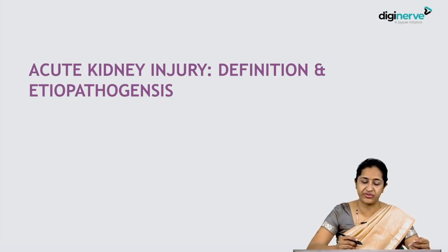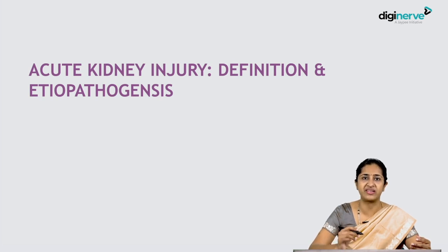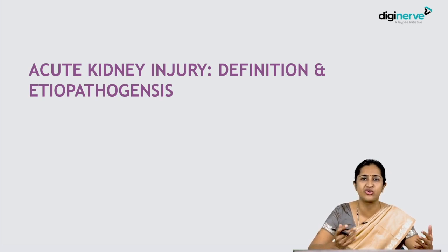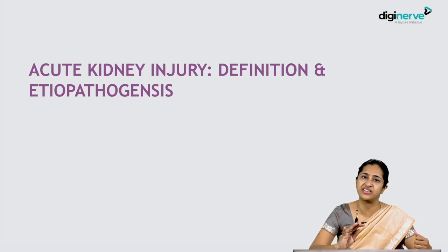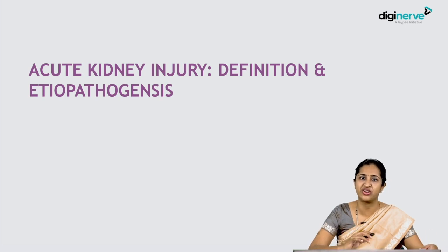Acute kidney injury is my second topic for today. One thing I want to say is that acute kidney injury is a newer term used for acute renal failure. Acute renal failure used to be used earlier, but now in pediatrics there is no term called acute renal failure, because essentially the term renal failure means there is no returning of that function. Acute kidney injury and chronic kidney disease are the terms used — AKI and CKD — and we do not use acute renal failure or chronic renal failure in children anymore.